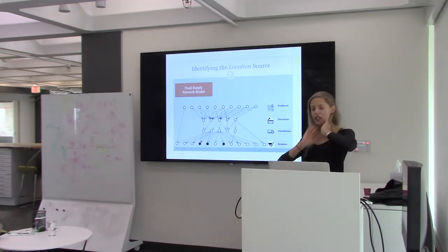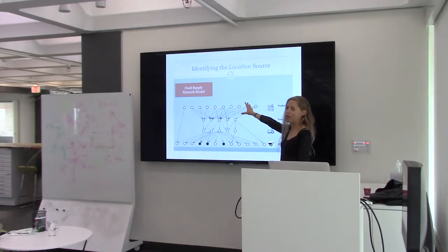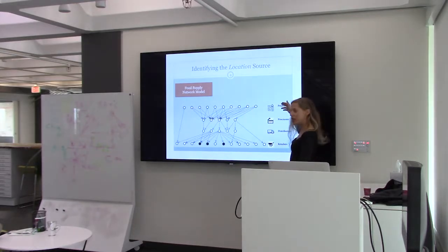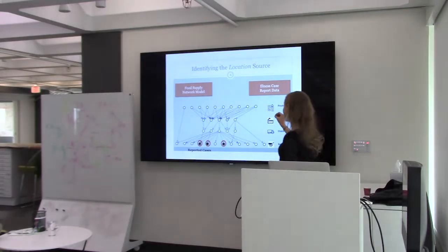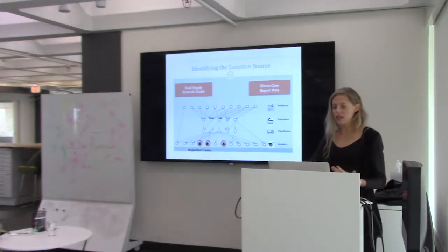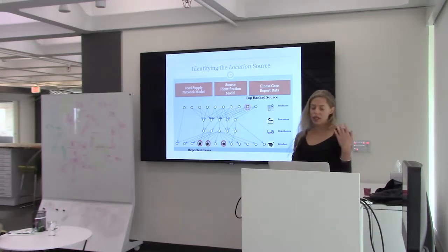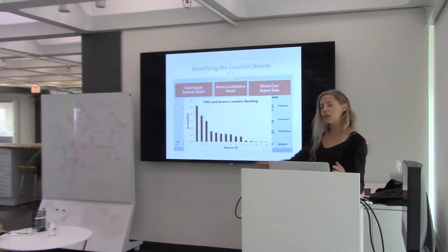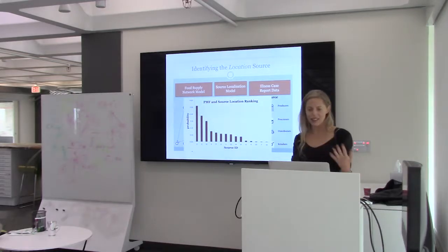Just a toy example of what we're doing. Assume we have a perfect model of the aggregated food supply chain network consisting of multiple stages of production, processing, distribution, and retailing or consumption. When we have an outbreak, we get cases of illness reported hopefully in association with specific locations like retailers or restaurants where food was purchased. The job of the modeler is to develop a model that can identify the highest probability source, the second highest probability source, and so on — developing a probability distribution and ordered ranking over all possible sources of the outbreak.